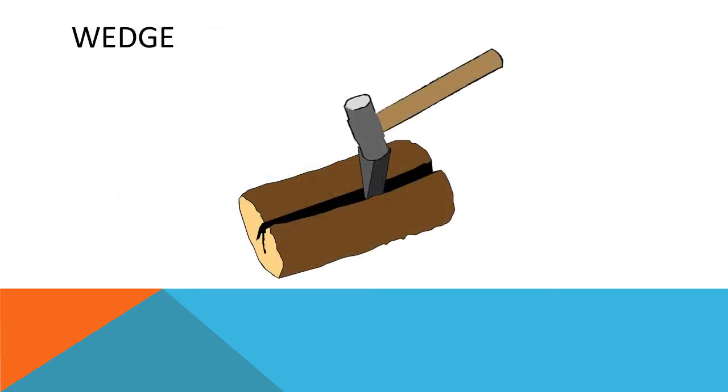Most simple machines reduce the amount of force but increase the distance. But others work just by changing the direction of a force. A wedge is an example of this. You can create a wedge by putting two inclined planes back to back. When you hammer a wedge down, the two sides of the wedge change the direction of that force to split something apart.